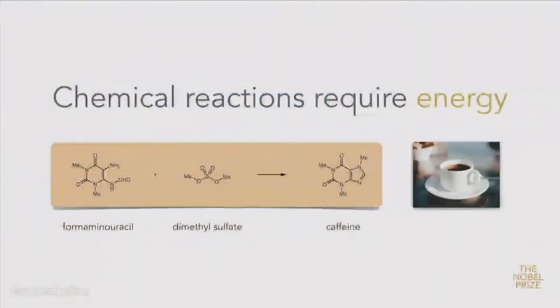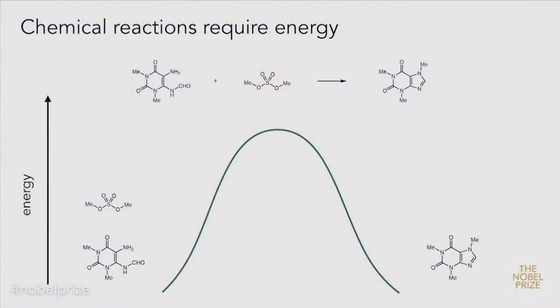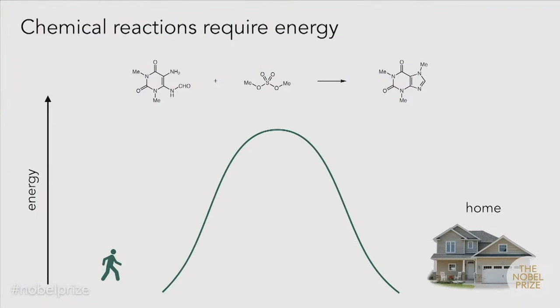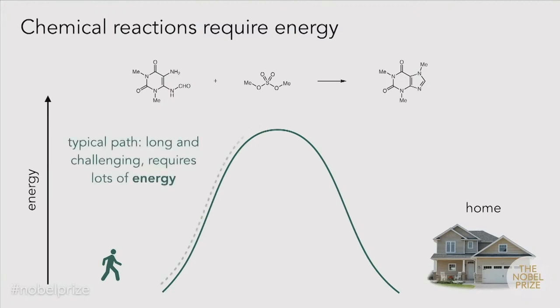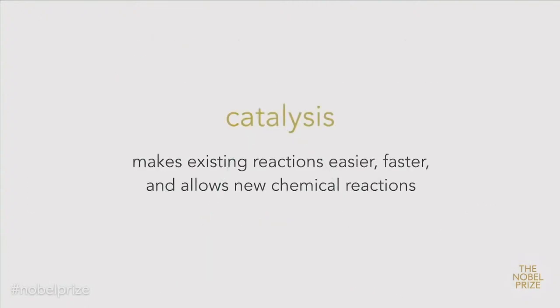To represent that, most chemists use what's called an energy diagram. Imagine every night when you're going home you have to walk over a hill — that would obviously require a lot of energy every single night. What catalysis does is lower the barrier, and in fact introduces a tunnel to make it so much easier for you to get home every night. In the same way, it does this for chemical reactions. It makes all chemical reactions easier and faster, and in many cases allows new chemical reactions to take place.